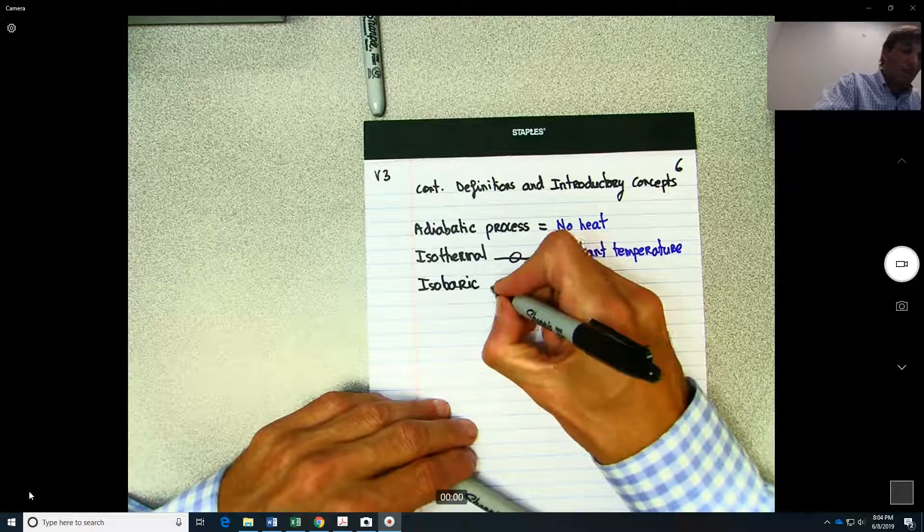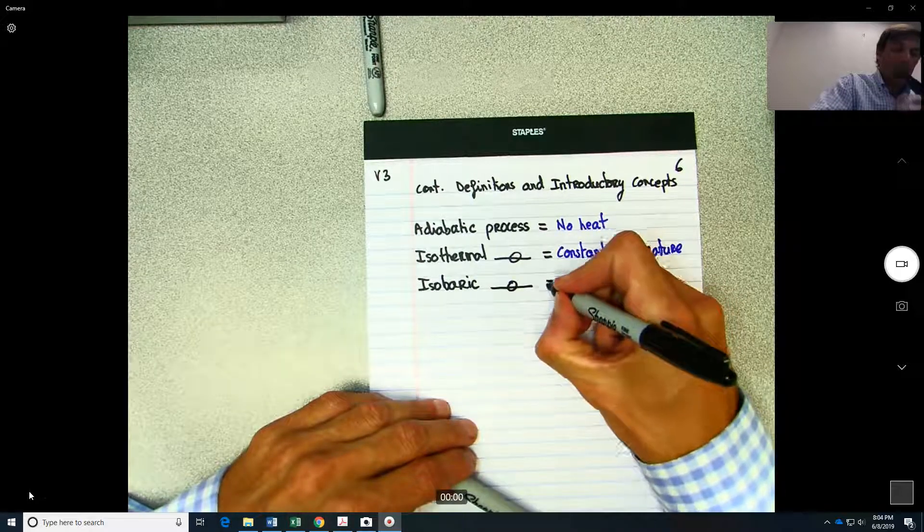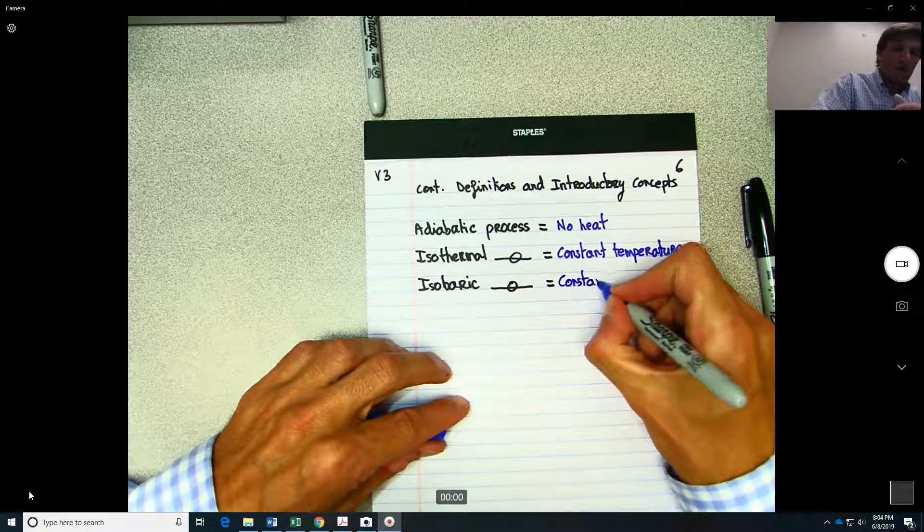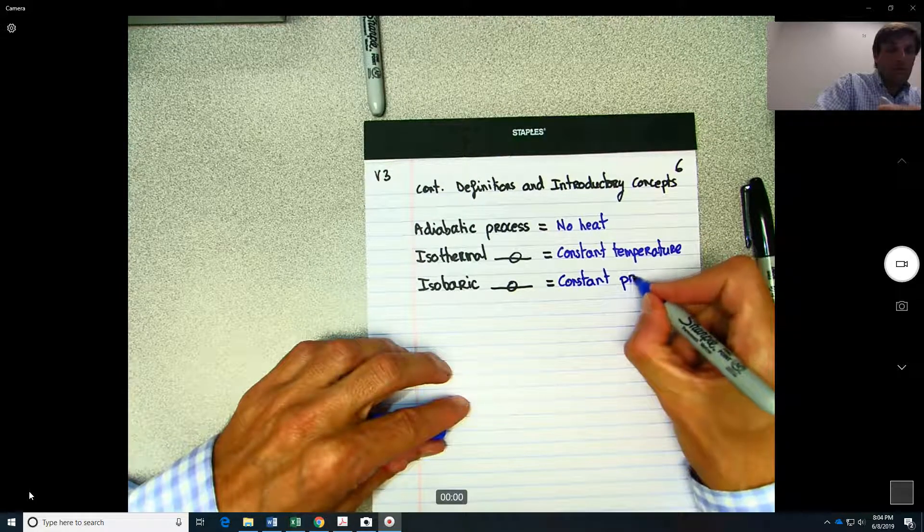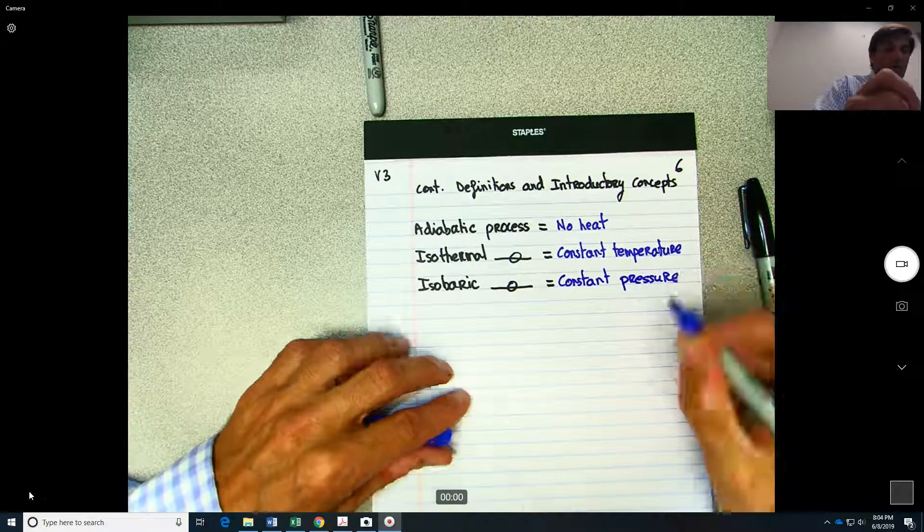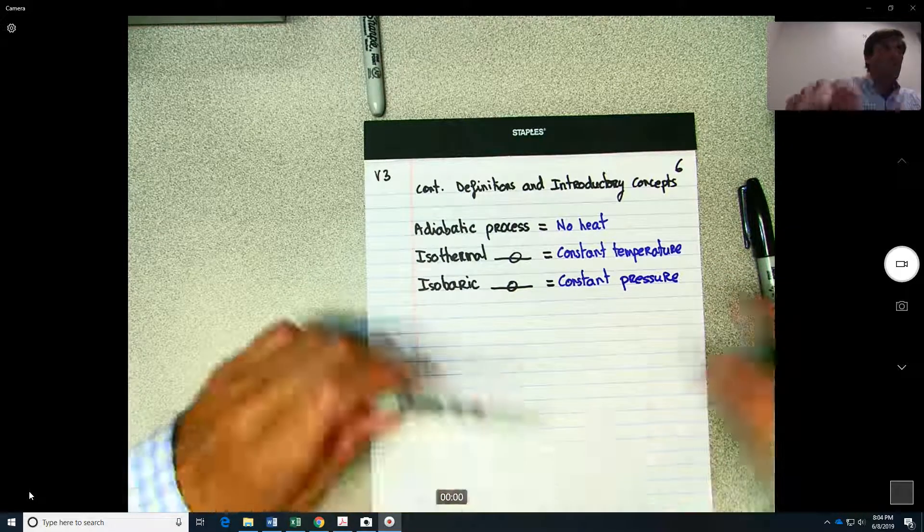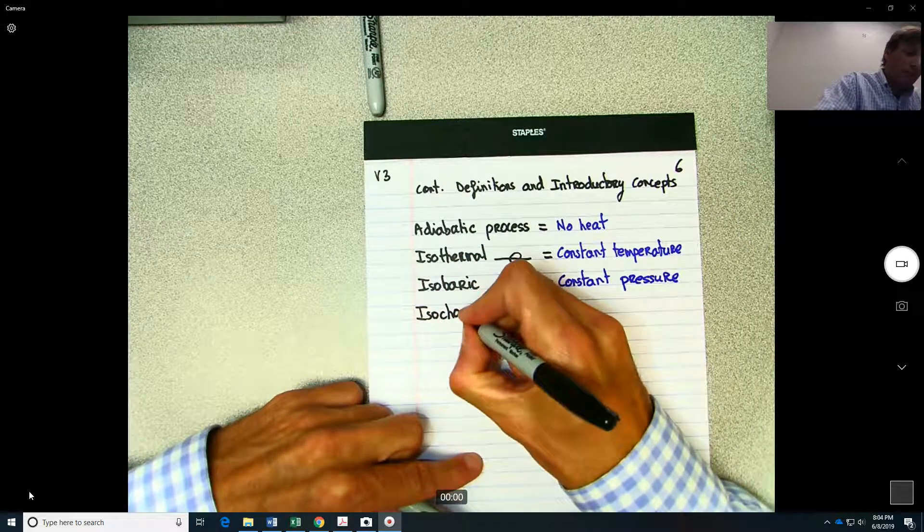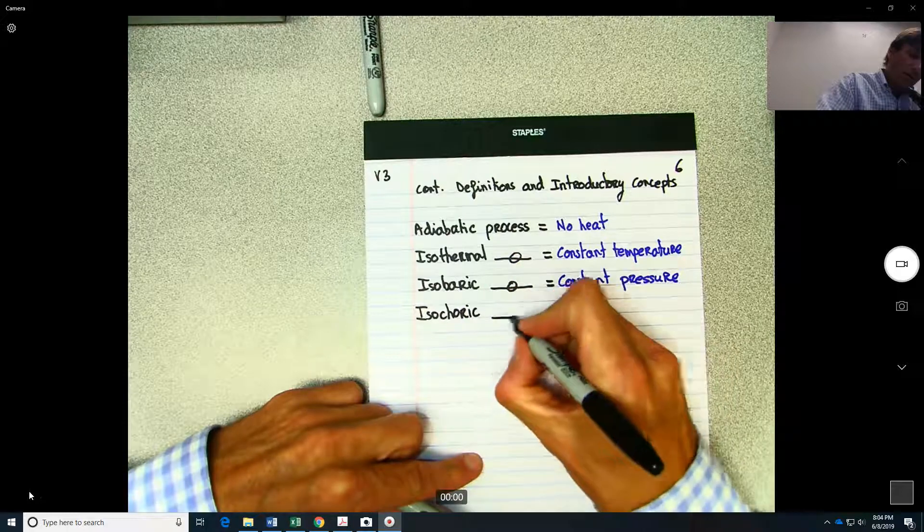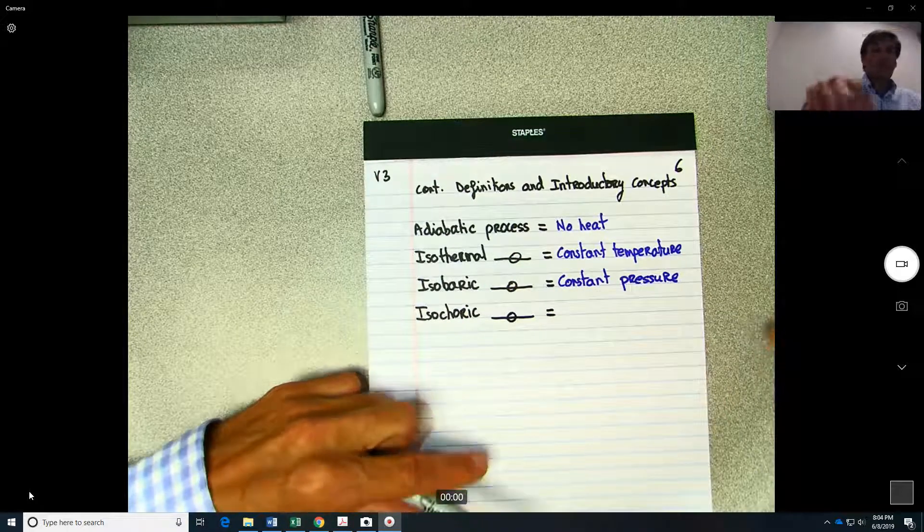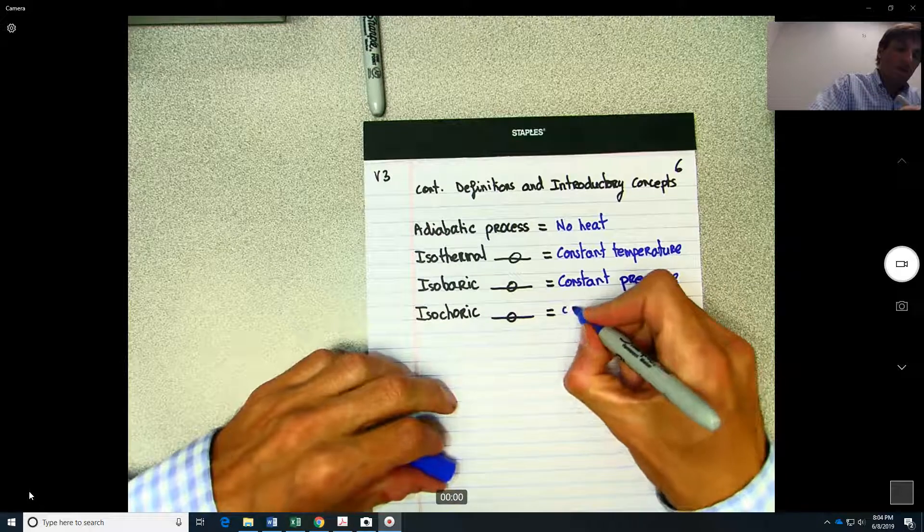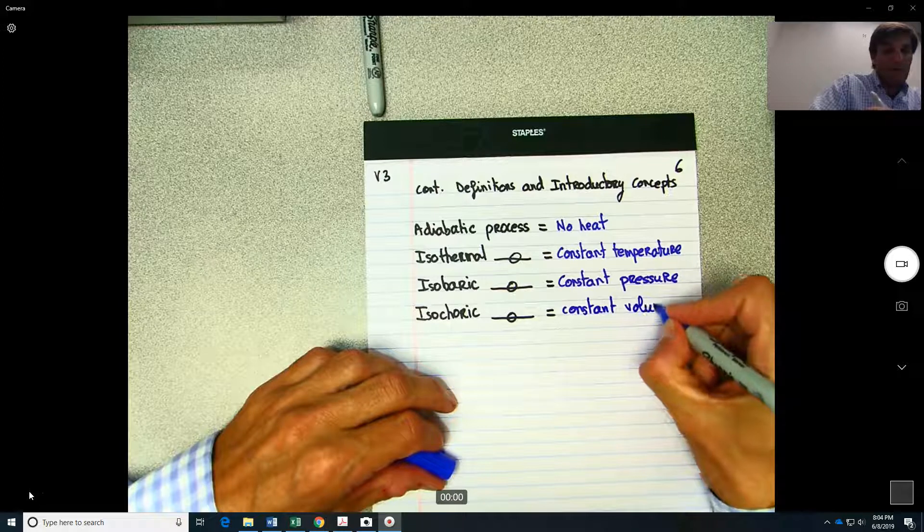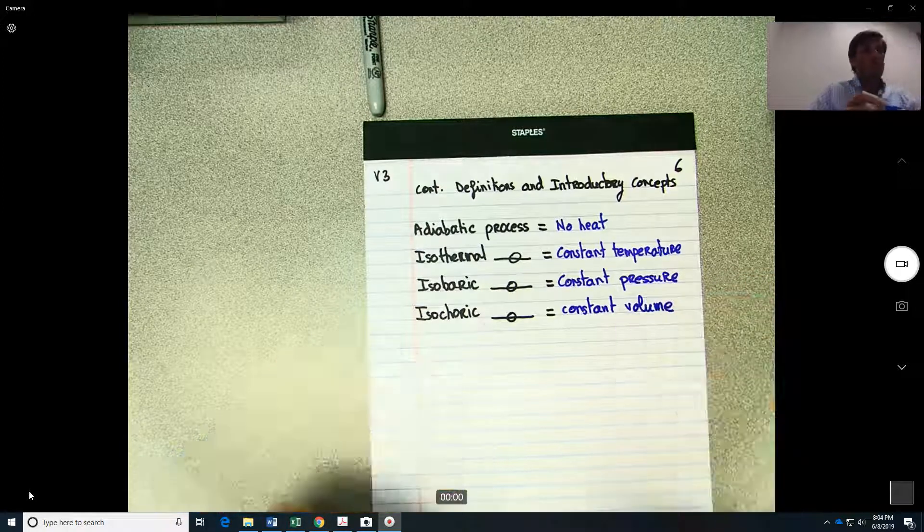Isobaric process, that means constant pressure. And you also could find isochoric process, which means constant volume.